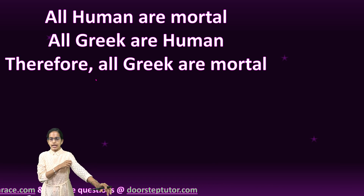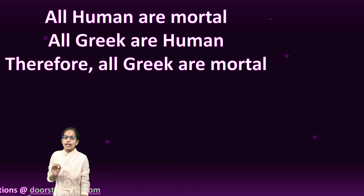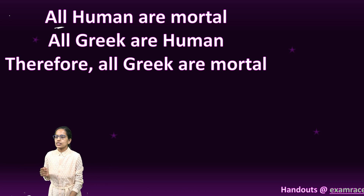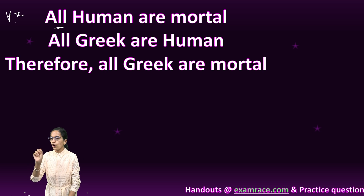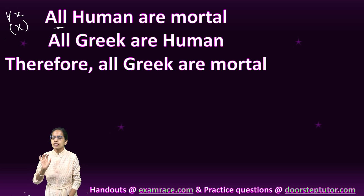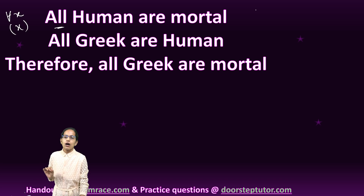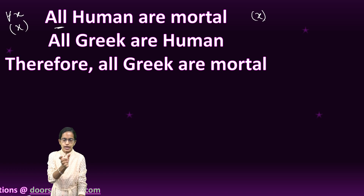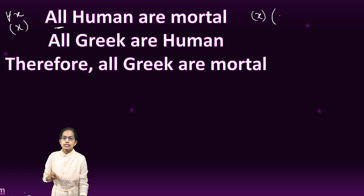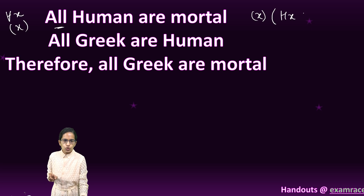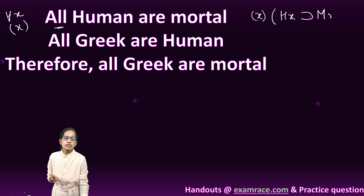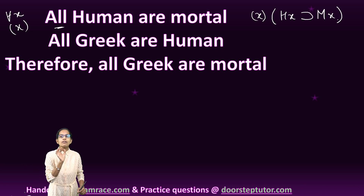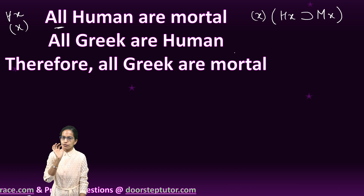Let's first write this in standard form. When I say 'all', I am referring to the universal quantifier. We can write it with the inverted A sign to indicate 'for all'. So the first formula is: for all x, if x is human, then x is mortal. That is my first well-formed logic formula.